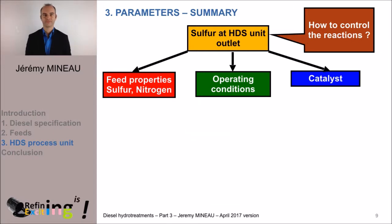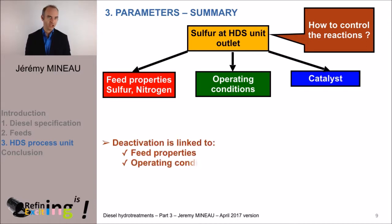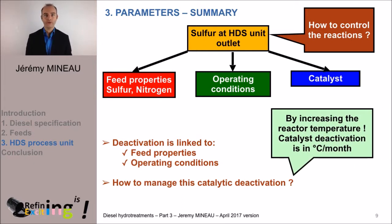During the cycle, coke forms at the surface of the catalyst. Remember that as soon as we exceed 370°C, there is a balance between hydrogenation and dehydrogenation of aromatics, which leads to coke formation. This coke deposits on the surface of the catalyst, causing the catalyst to lose activity — it deactivates. This deactivation is linked to the feed properties and operating conditions.